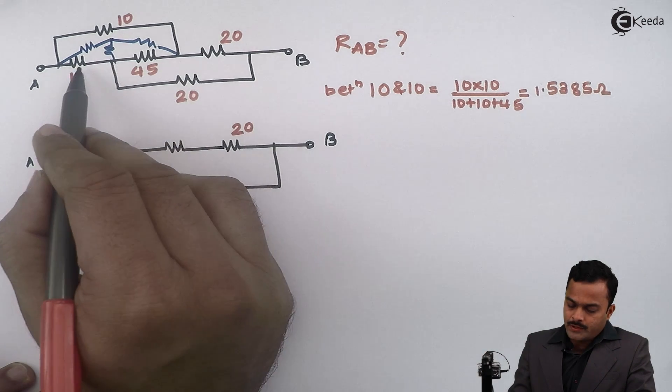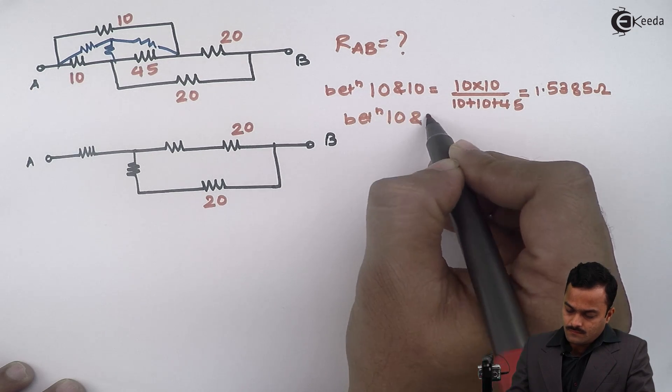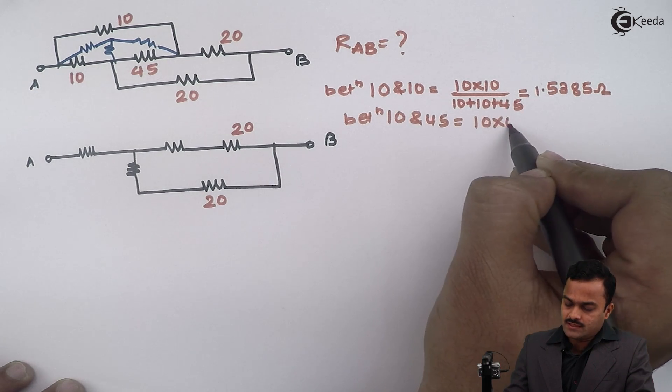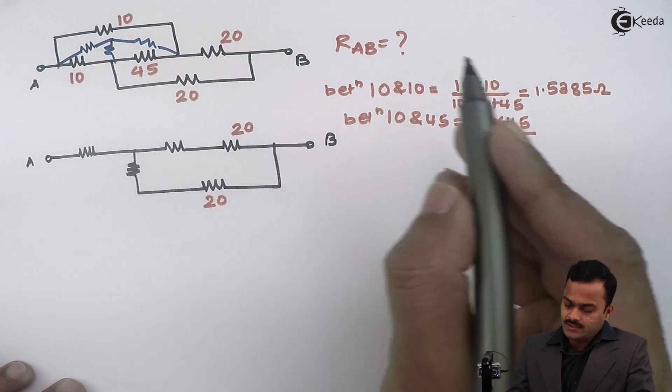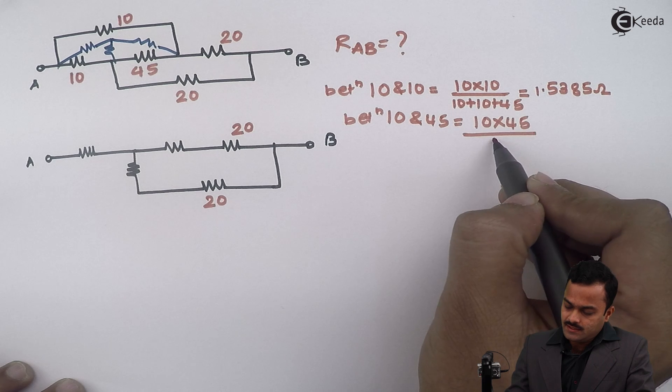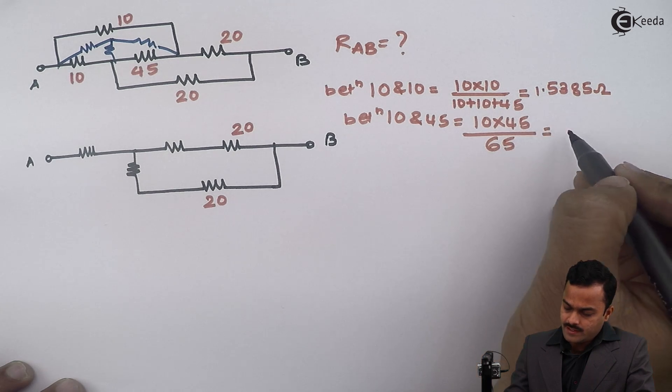Now between 10 to 45, multiplication of two resistors divided by addition of three. So already we have added these three, this comes around to 65, and I will get